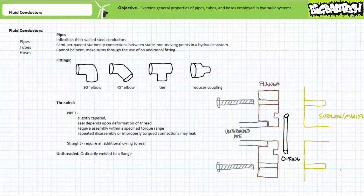Unthreaded pipes, in contrast, obviously have no threads and are customarily welded to a flange. The flange is then bolted to a subplate or manifold to provide a sturdy, leak-free, yet comparatively difficult to disassemble connection.